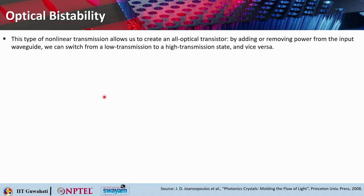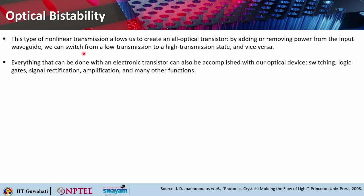This type of nonlinear transmission allows us to create an all-optical transistor. By adding or removing power from the input waveguide, you can switch from a low transmission to a high transmission state and vice versa. Everything that can be done with an electronic transistor can be accomplished with this optical device: switching, logic gates, signal rectification, amplification, and many other functions.